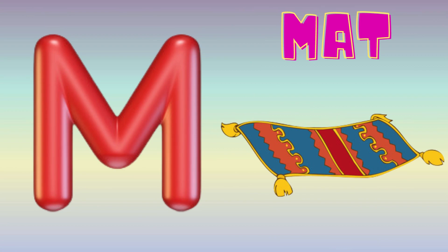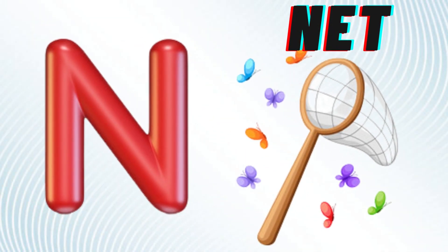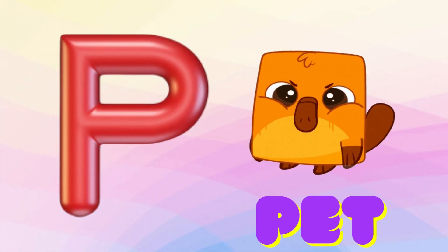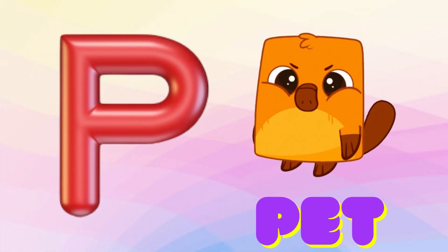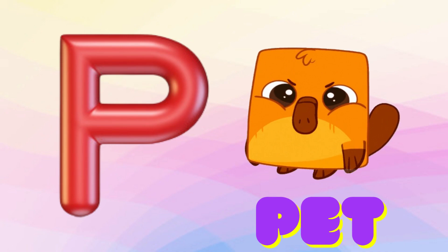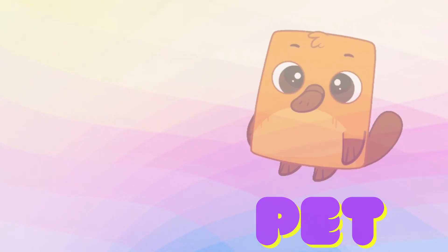M is for Mat, M-M-Mat. N is for Net, N-N-Net. O is for Orange, O-O-Orange. P is for Pet, P-P-Pet.